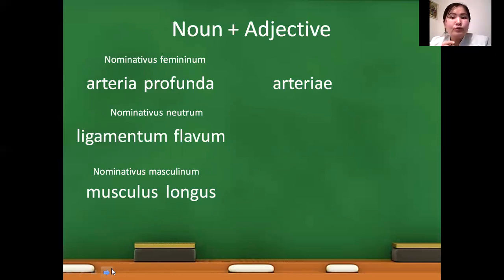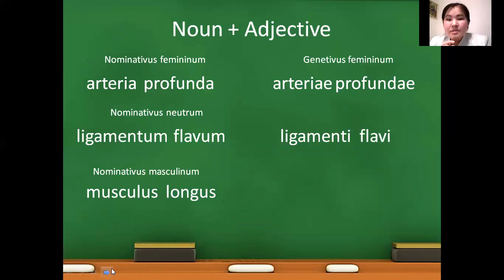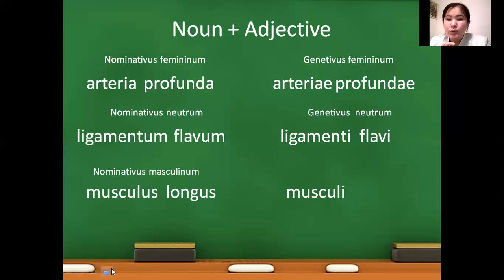Arteria profunda — both terms are used in genitivus femininum form. We can recognize this by the -e endings. Ligamenti flavi — these terms are used in genitivus neutrum; we can judge it by their genitivus endings. Musculi longi — the adjective is also used in genitivus form, masculine gender.